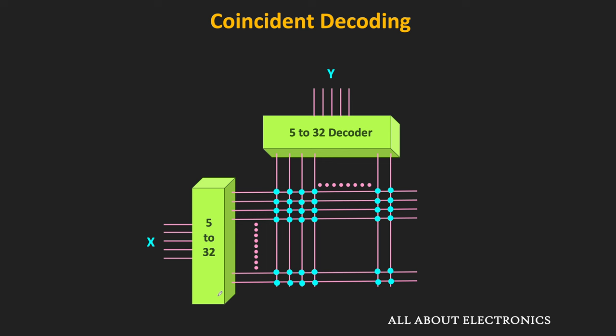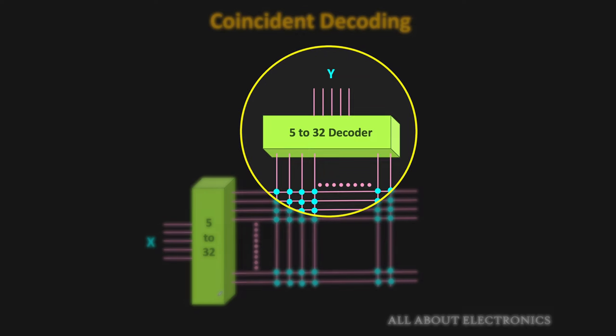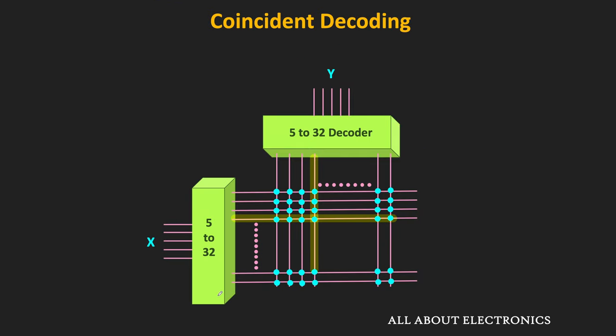The 10-bit address is divided into two parts — one part is given to the row decoder which selects the specific row, and the second part is given to the column decoder which selects the specific column. Based on these two addresses, the specific row and column get selected, and the location where the row and column coincide gets selected. Each dot represents a specific word in the memory. For example, if the row decoder input is 11110 it selects the second-to-last row, and if the column decoder input is also 11110, the word where both row and column coincide gets selected.